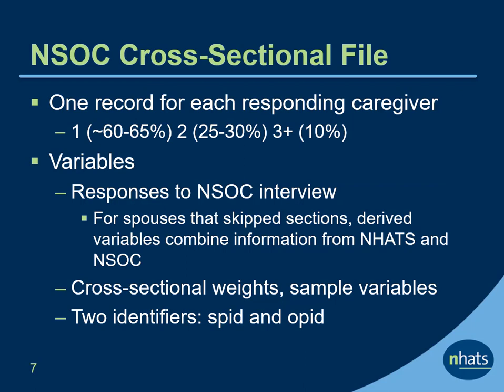The data from interviews with current caregivers are included in the NSOC cross-sectional file. The file includes one record for each caregiver who responded to NSOC. We have found that about 60–65% of eligible SPs have one responding NSOC helper, 25–30% have two, and about 10% have three or more. The file includes responses to the NSOC interview. For spouses that were routed around some questions, derived variables are provided that combine information from NHATS with NSOC. Each record also includes a set of cross-sectional weights, sample variables, and two identifiers, the SP ID and the OP ID.